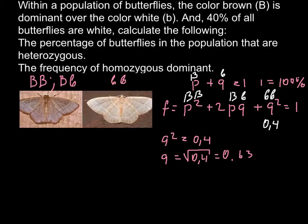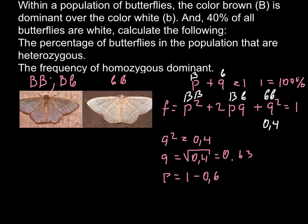From the formula we know that p plus q equals 1. So if we know q, we can find p. And p would equal 1 minus q, or 1 minus 0.63, so p equals 0.37.